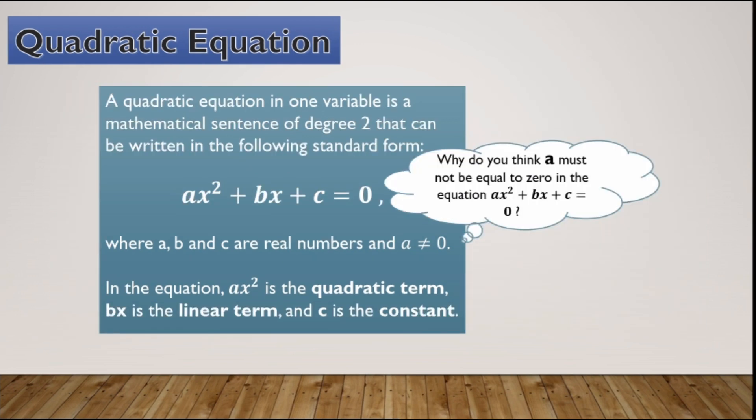Why must a not be equal to 0 in the equation ax squared plus bx plus c is equal to 0? It is because when a is equal to 0, the quadratic term will also become 0, and the equation is no longer a quadratic equation but a linear equation.